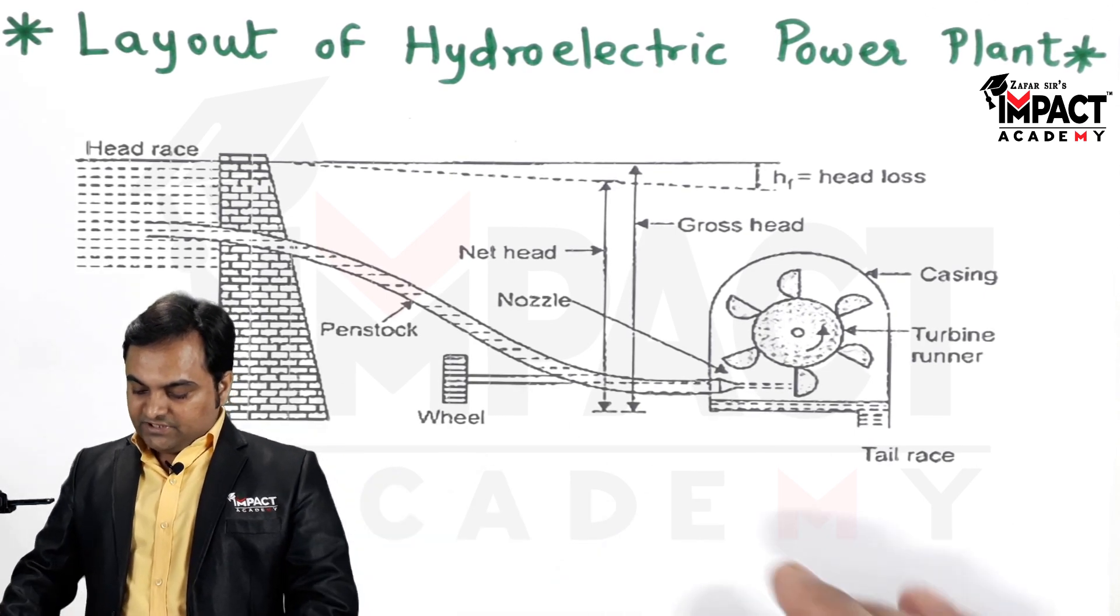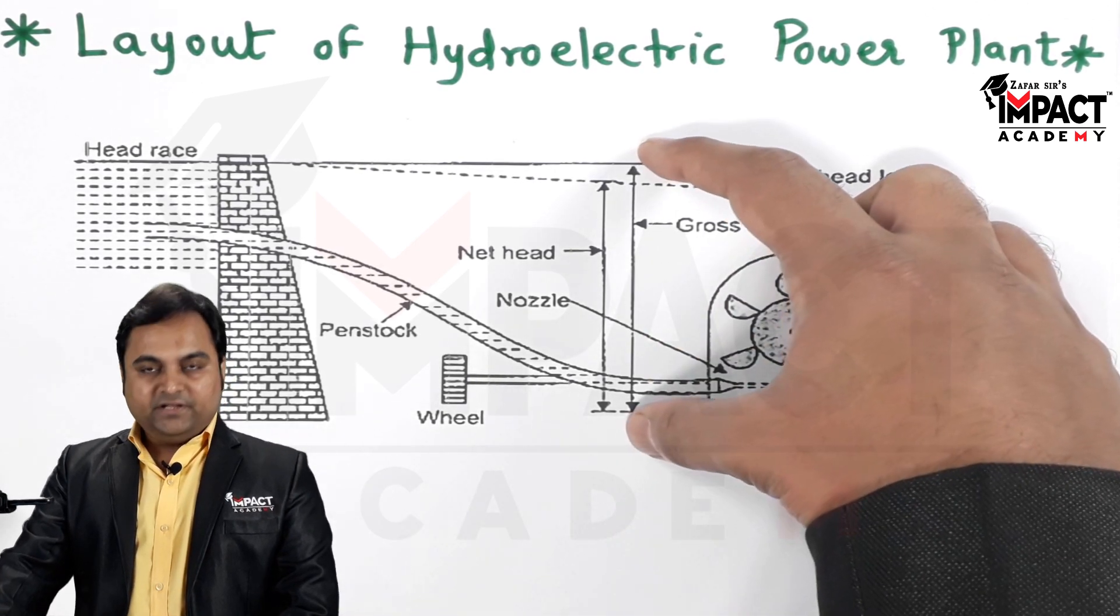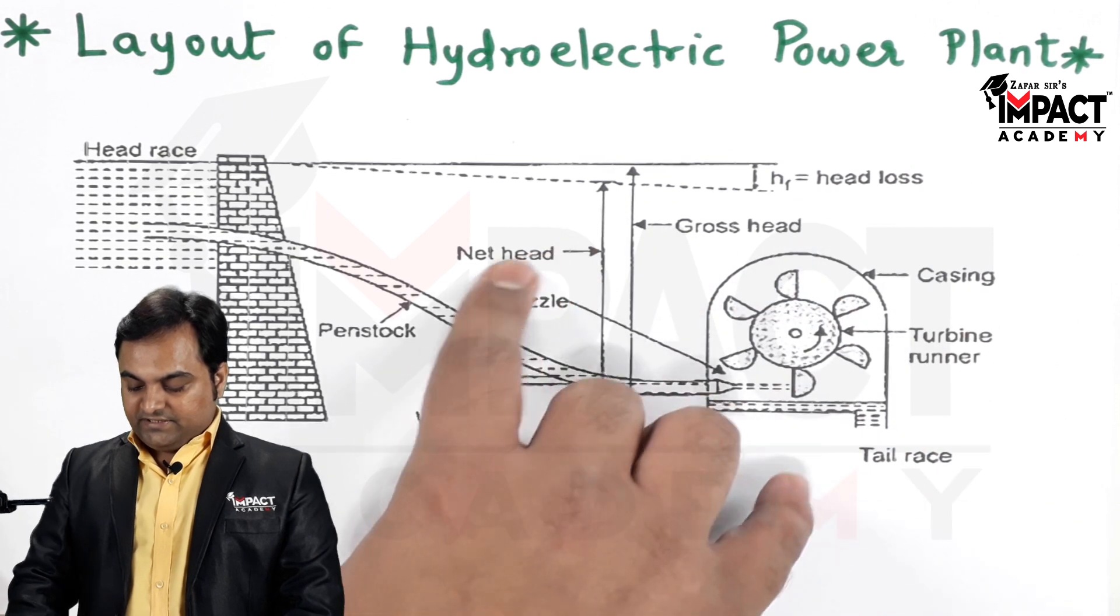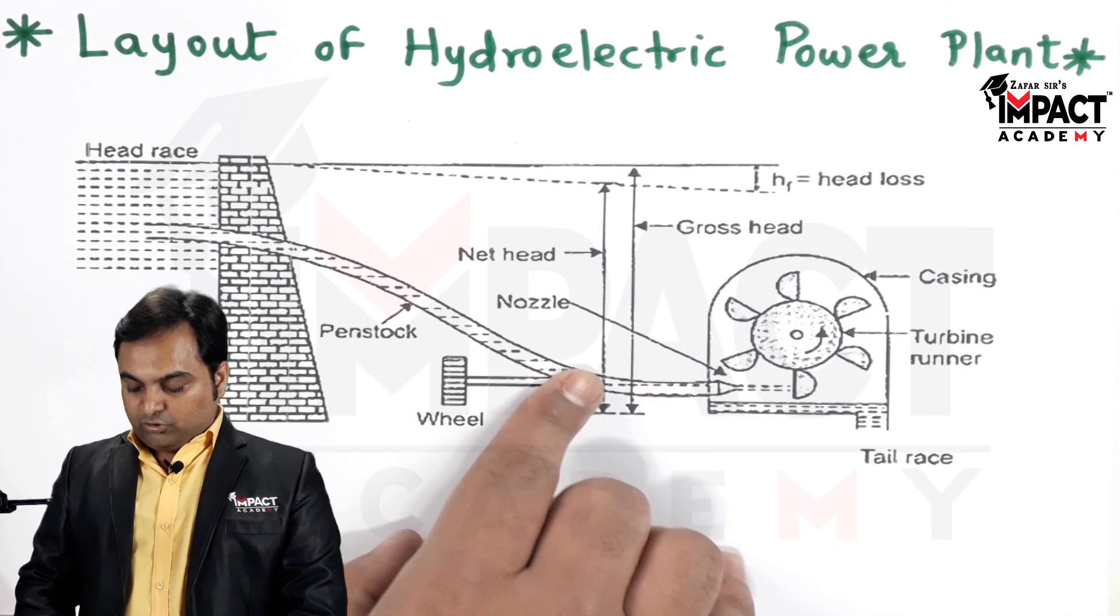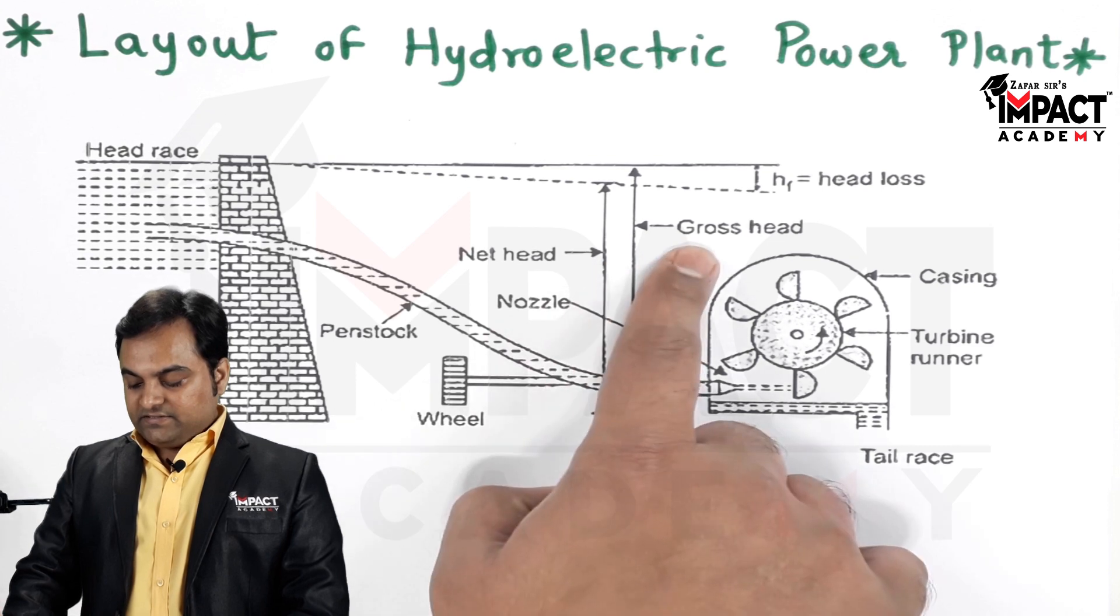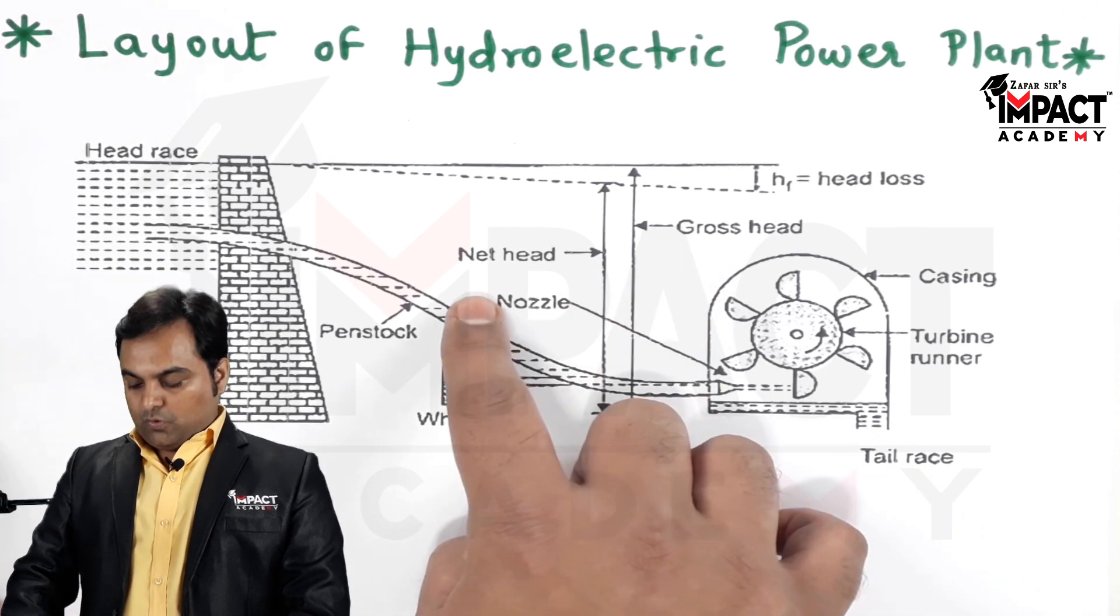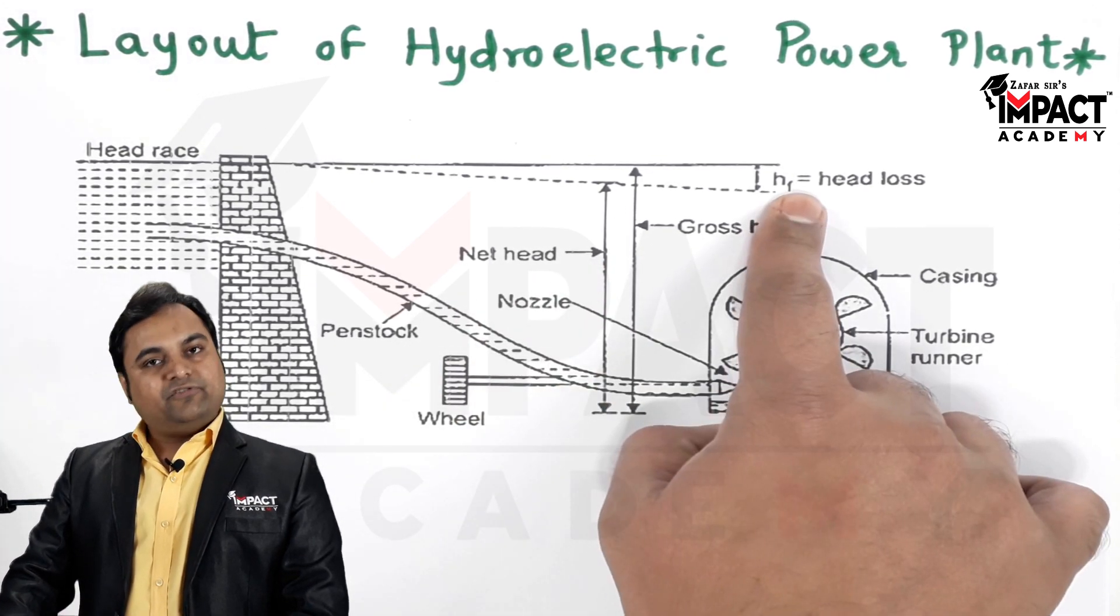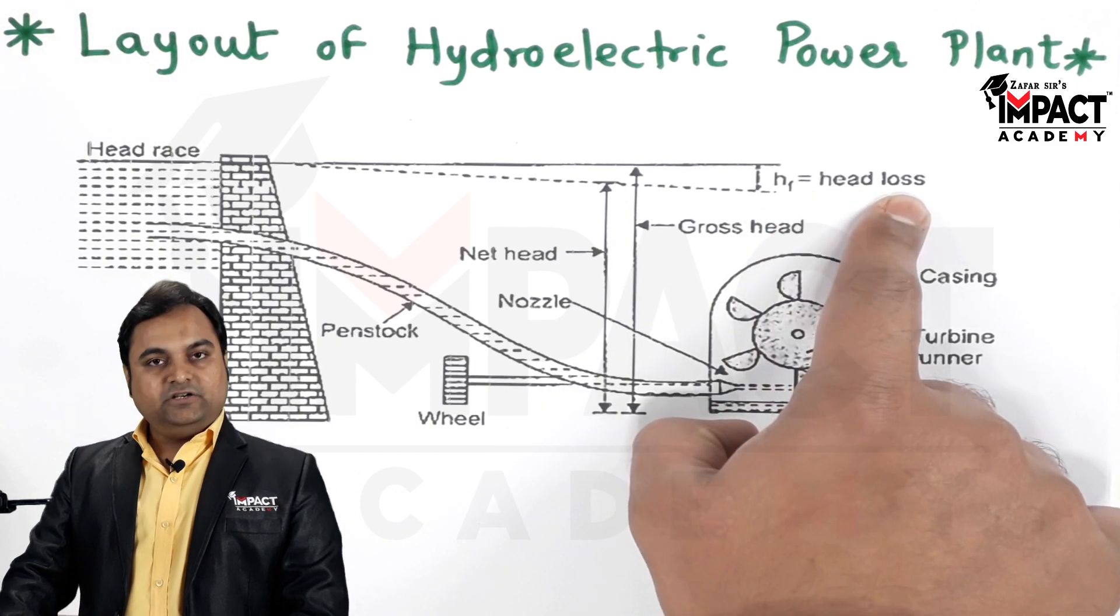Next, what happens here is since the gross head is a maximum value, we can see that there is another head which is called as net head. So net head is less than the gross head, and why it is less? Due to friction. Here we can see there is head loss. So this is the head loss which is due to friction.